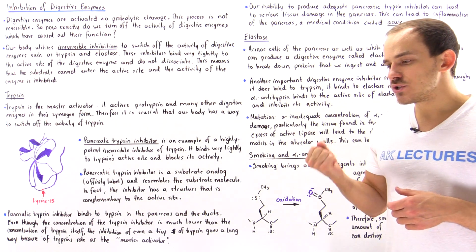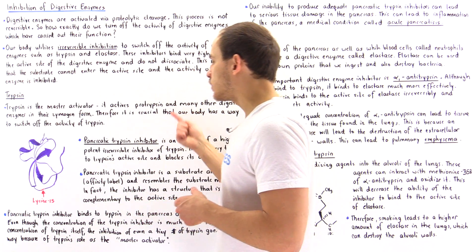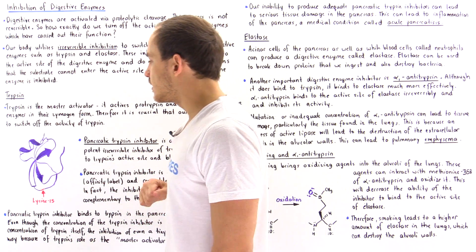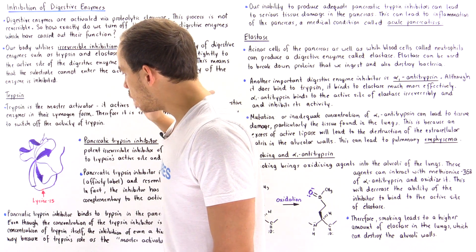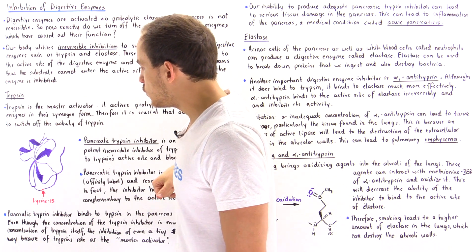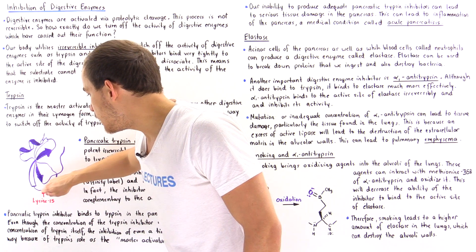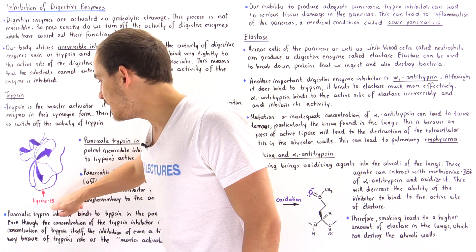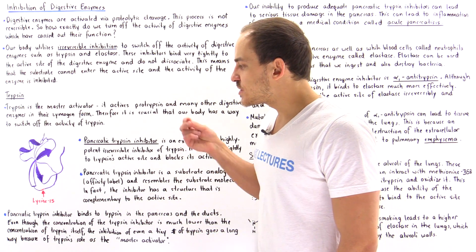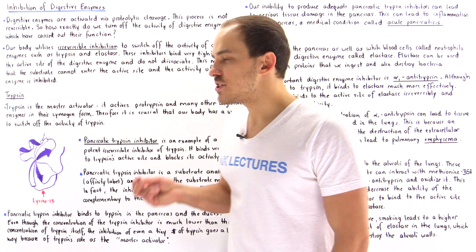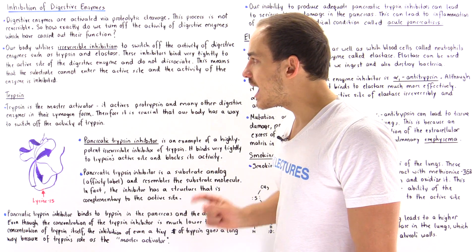There is a special type of inhibitor our cells produce known as the pancreatic trypsin inhibitor. It has one alpha chain and two beta chains. Notice the single amino acid lysine-15, which has a negative charge responsible for binding to the positively charged amino acid found in the active site of trypsin.